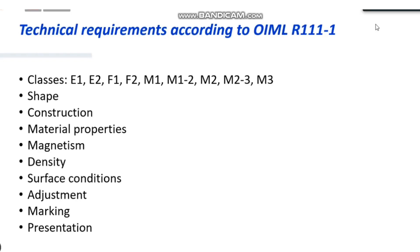The standards, the surface conditions of standards adjustment, how do you adjust it, the marking and also the presentation of that. So why do we need to have all these technical requirements? This is just to guarantee the mass stability over a long period of time so that we can maintain the mass value. In order to do this, we need to have good mechanical stability and also good surface quality on the mass standards.